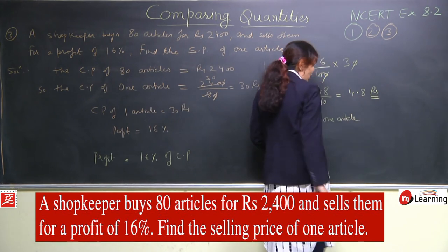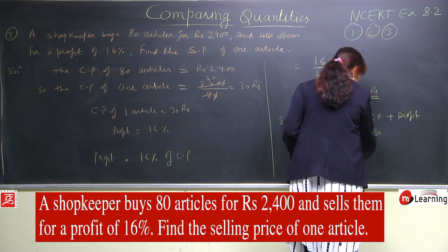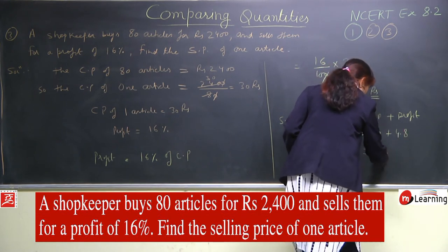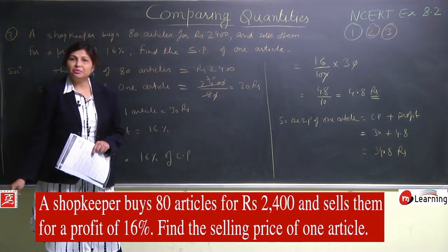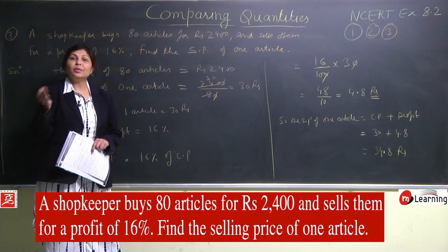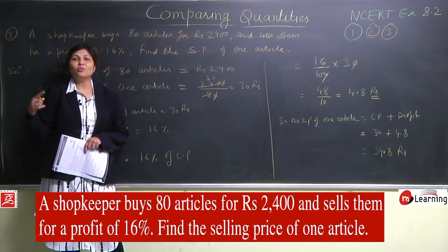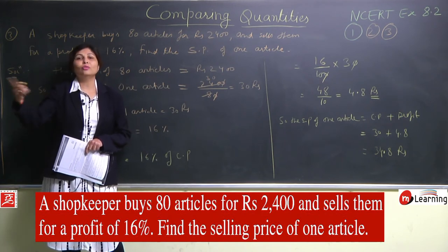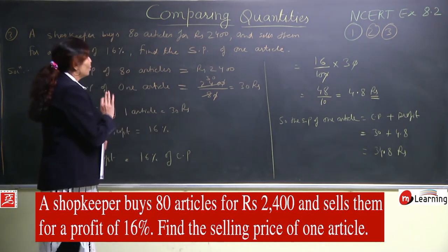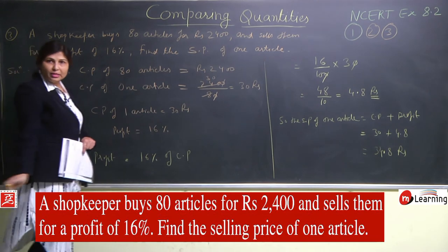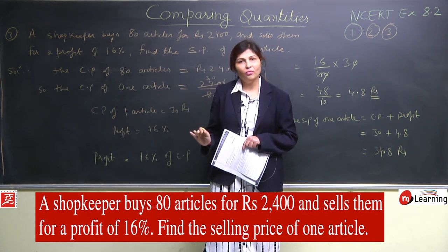So the selling price of one article = CP + profit = 30 + 4.8 = 34.8 rupees. Yaane ek article jo wo sale kar raha hai, 34.8 rupees mein sale kar raha hai. Agar 80 articles ki baat karte, to 80 × 34.8 karte — but yahan zaroorat nahi kyunki unhone pucha nahi. Question mein humein one article ki value nikalni padi: pehle one article ki cost price nikali, profit clearly diya hua tha, aur final selling price find out ki.